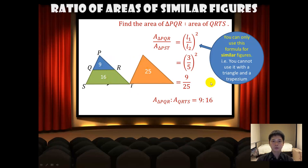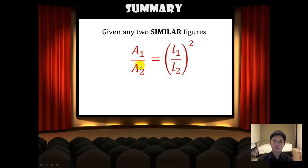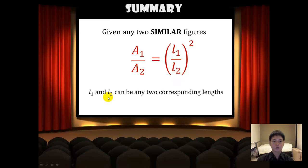Before we move on, do take note of this key point. In summary, if we have any two similar figures, A1 over A2 is equal to L1 over L2 squared, where L1 and L2 can be any two corresponding lengths. That's all for this part of the chapter.